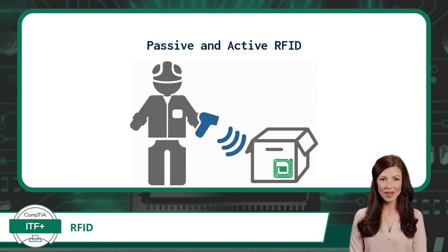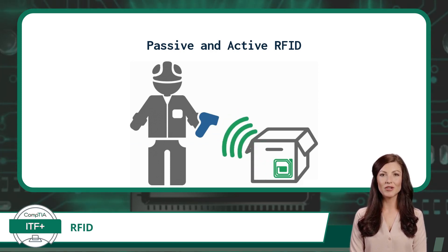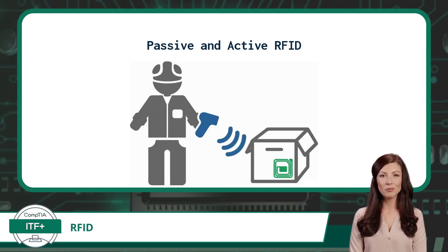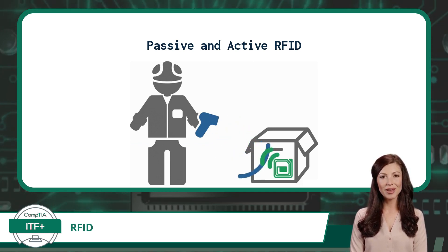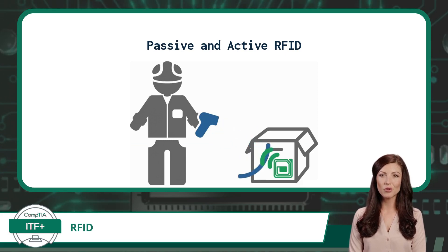Passive RFID is cost-effective and suitable for short-range applications, while active RFID offers greater range and real-time tracking capabilities, making it ideal for scenarios like asset management or vehicle tracking.